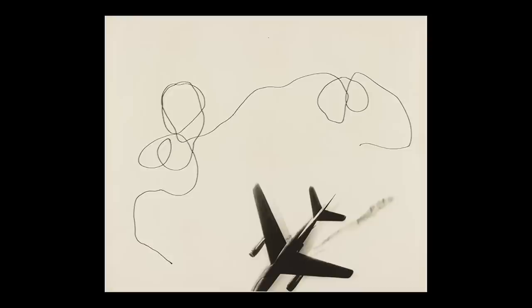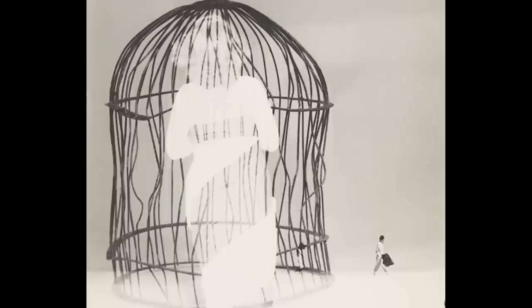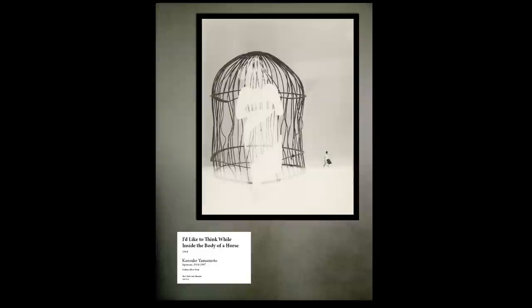Another photographer who plays with juxtaposition is Kansuke Yamamoto. Yamamoto was a poet and artist, and he referred to his dreamlike photographs as visual poetry. Yamamoto didn't have the luxury of a computer to alter his images. Instead, he manipulated negatives in a photography darkroom and also used collage techniques to create unexpected juxtapositions.